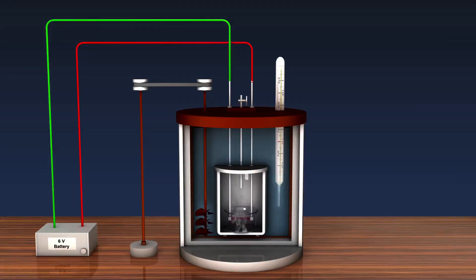During the process, fuel of a known quantity is placed inside the bomb and ignited. The bomb is filled with excess oxygen at 25 to 30 atmospheric pressure.